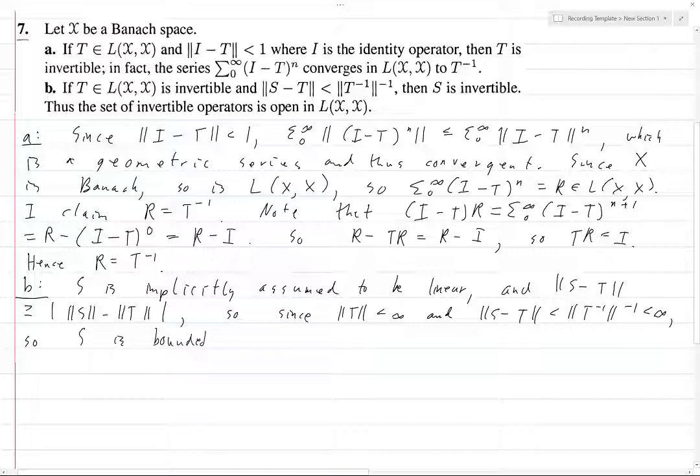So S is bounded. That's because the difference between S and something of finite norm... you have infinity is greater than this thing which is greater than or equal to the difference between S and something of finite norm. So the norm of S has to be finite, which means S is bounded. And thus S is in L(X,X).